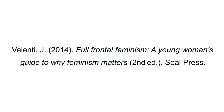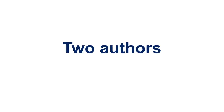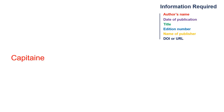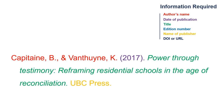This is your APA book citation. You may have a book with multiple authors. For two authors, add the author's last name, comma, and initial. Add a period, comma, and an ampersand before including the second author. The rest of your citation will be completed the same way as before.